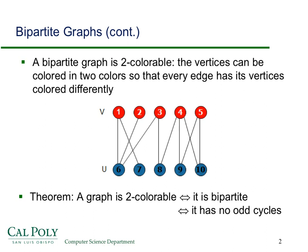So this leads us to the following theorem. The graph is two colorable if and only if it's bipartite, if and only if it has no odd cycles.